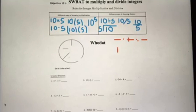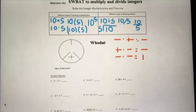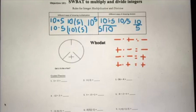Now let's say you had a positive times a negative. You would just cover those up and look at what's left — a negative. That's because a positive number times a negative number is a negative. Now let's say we had two negatives being multiplied by each other — just cover both those up and notice what's left over. The positive is left over. That's because a negative times a negative is a positive.